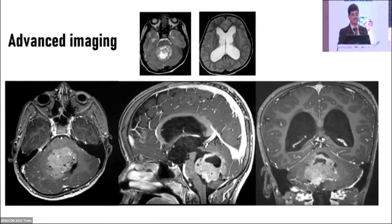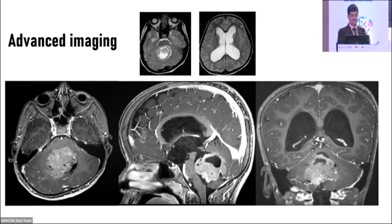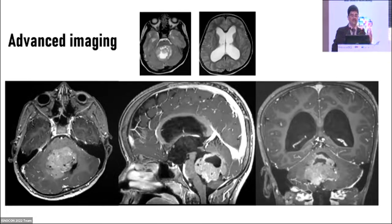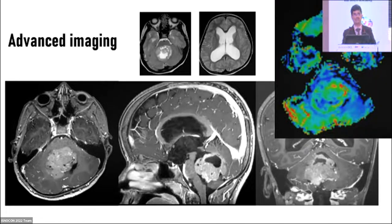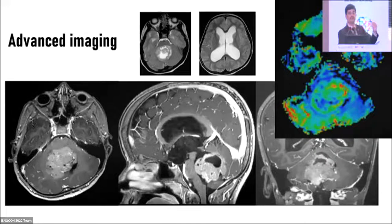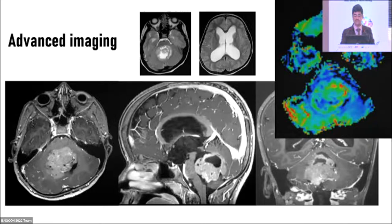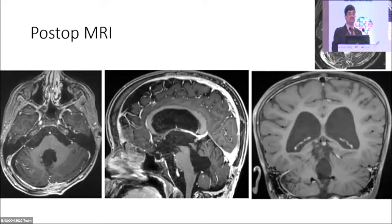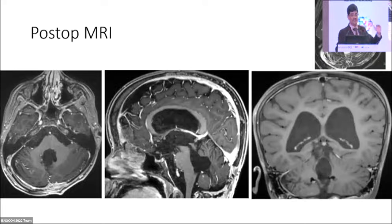This is a standard run-of-the-mill medulloblastoma — a large tumor occupying the floor of the fourth ventricle, arising from the vermis, causing obstructive hydrocephalus. Fine dot-like vascular markings were seen in the right cerebellum, which we might normally ignore. Our radiologist picked it up and performed perfusion studies, showing very high perfusion in the right cerebellum — actually leptomeningeal disease along the cerebellum, which would otherwise be missed on routine MRI.